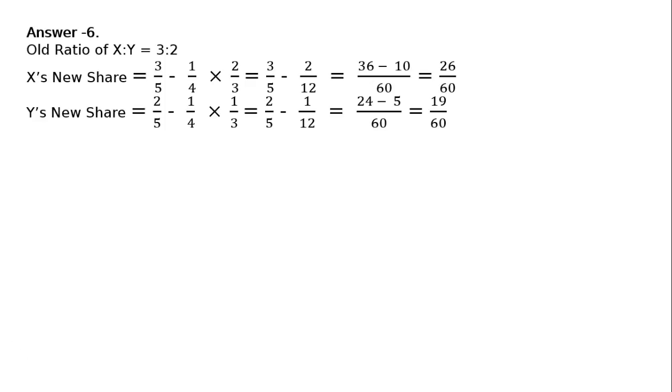one-fourth multiplied by one-third, that is equal to 2 upon 5 minus 1 upon 12, that is equal to 24 minus 5 upon 60, that is equal to 19 upon 60.